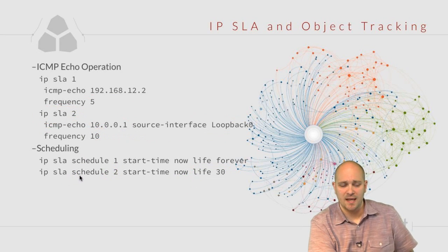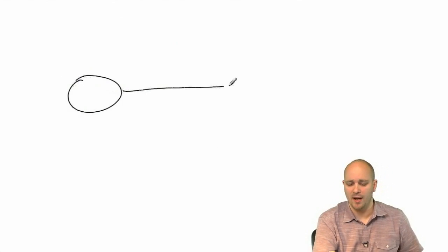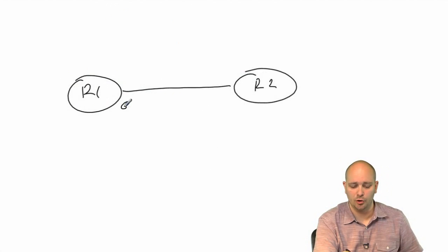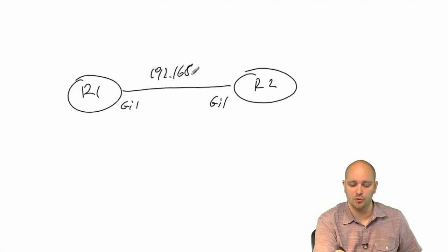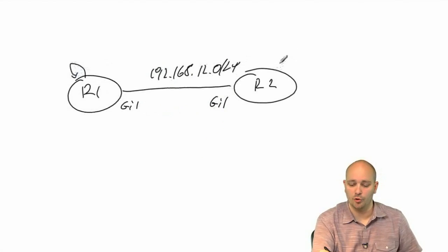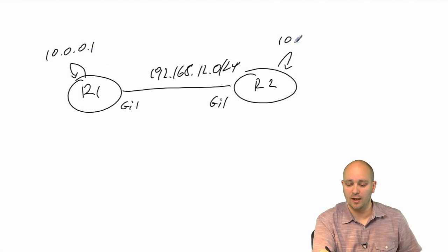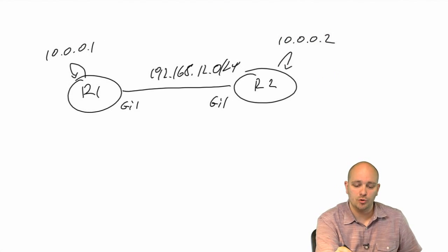Let's take a look at this in action. I'm going to have a very simple network: R1 and R2 directly connected on gigabit interface 1 on both sides with IP addresses in the 192.168.12.0/24 range between them. Both routers will have loopback interfaces — R1 with address 10.0.0.1 and R2 with address 10.0.0.2.